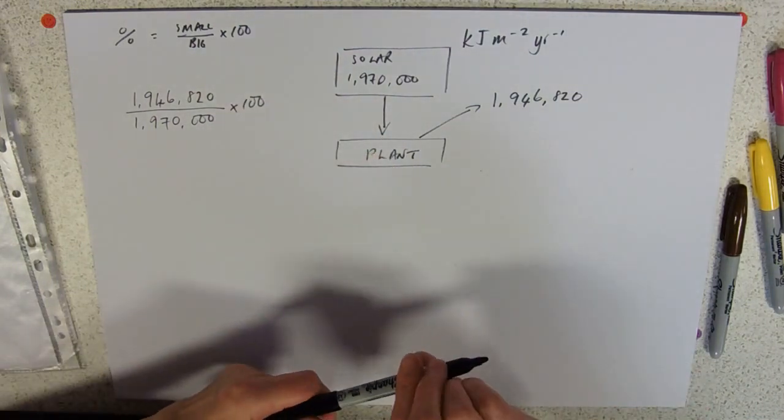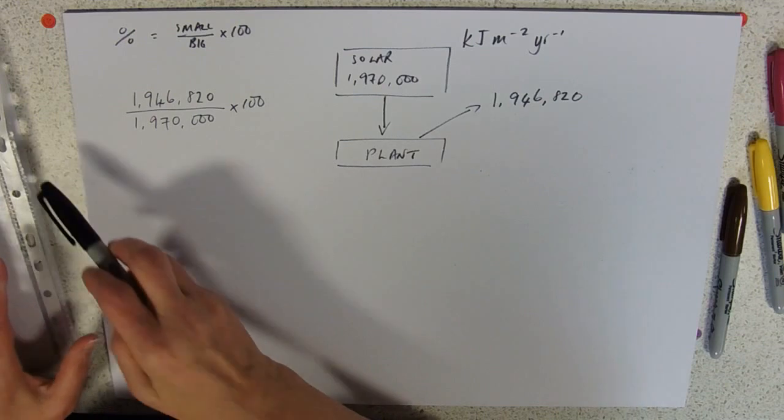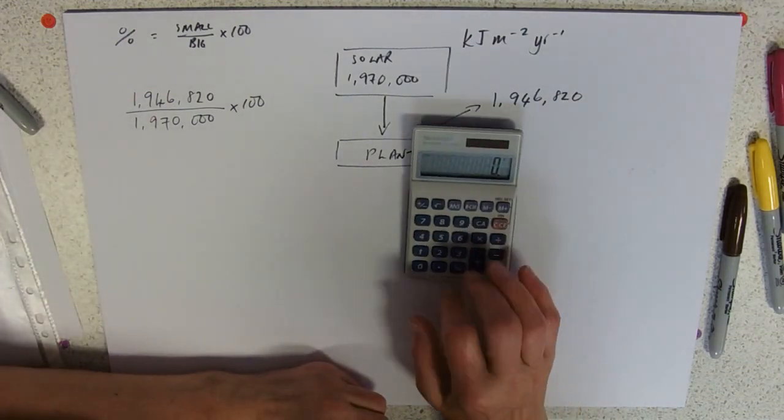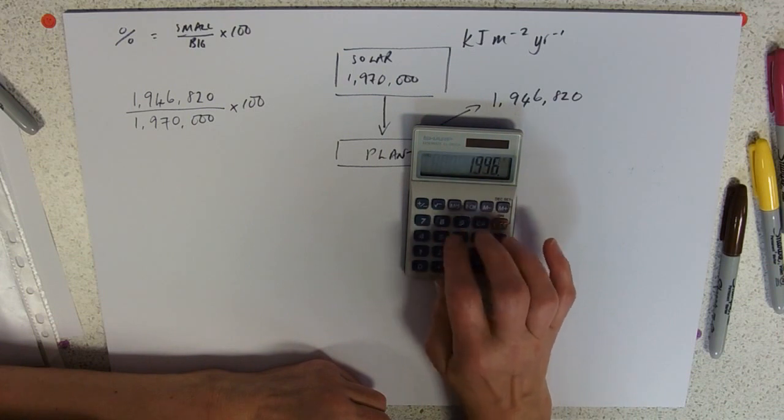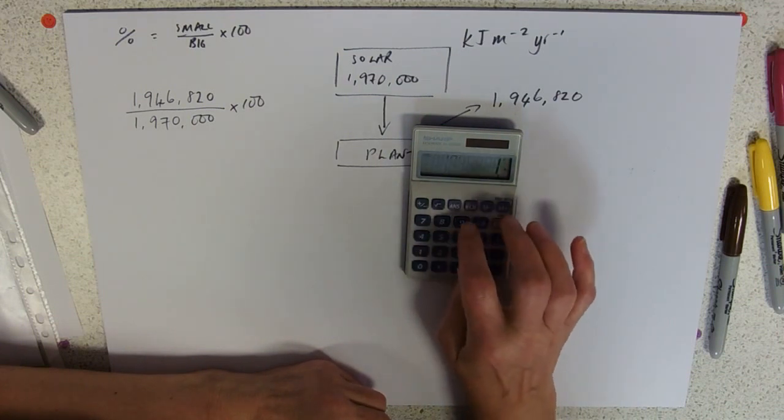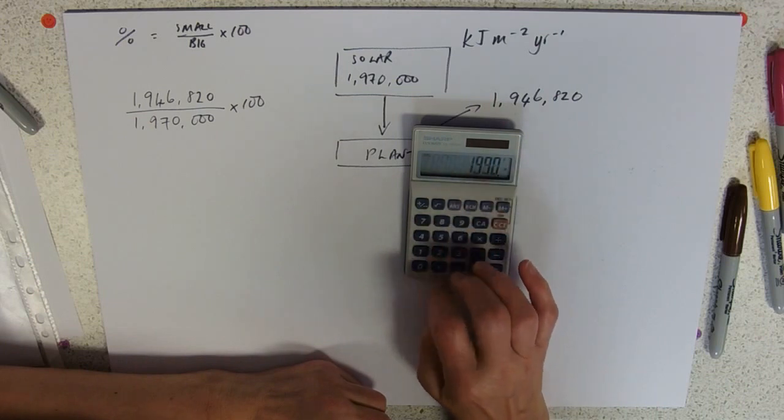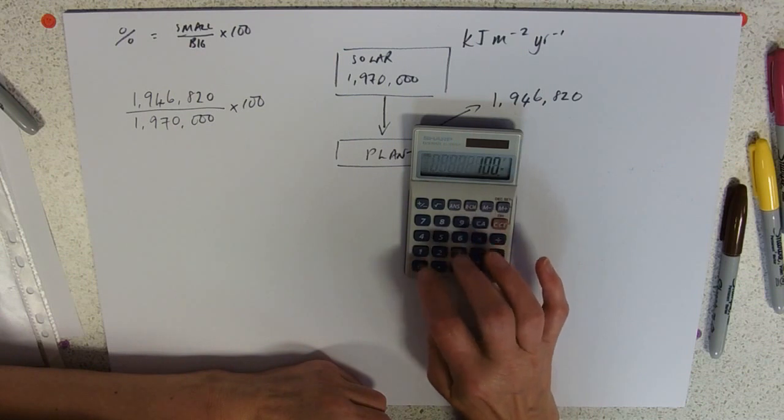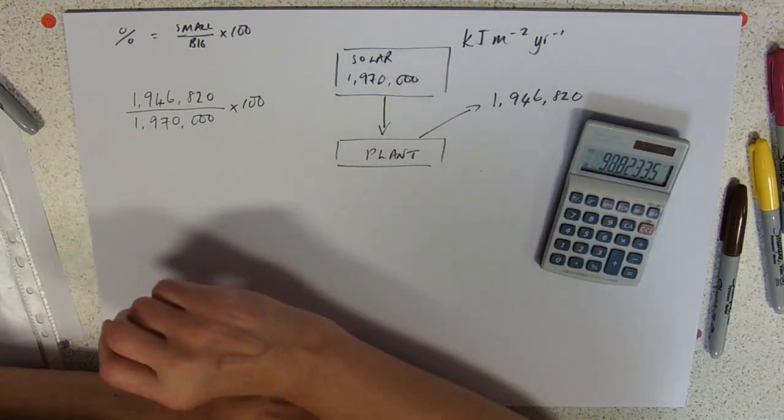That will give us the efficiency of photosynthesis. So calculator out: 1,946,820 divided by 1,970,123 equals, multiplied by a hundred equals.